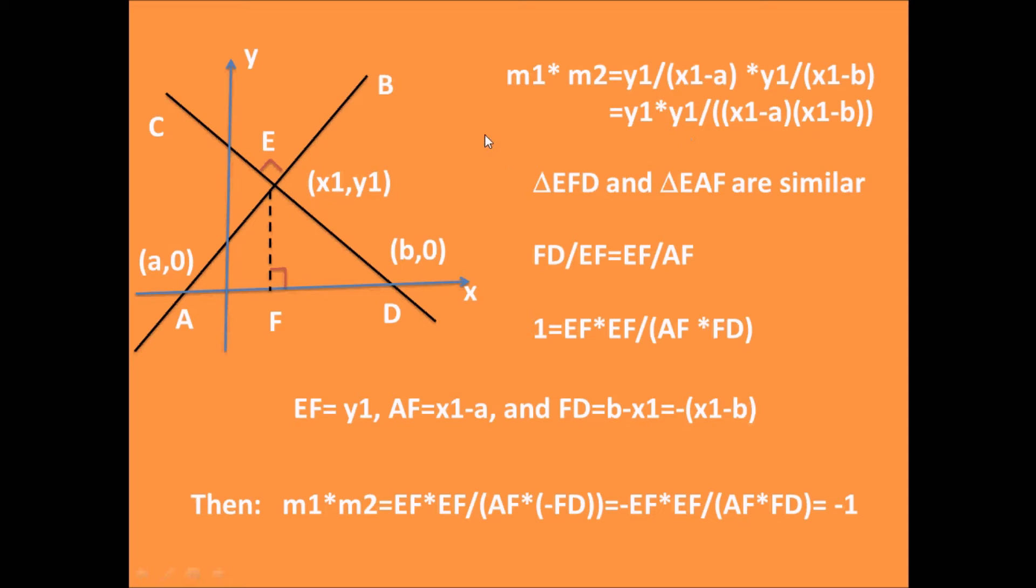If we draw a line from E perpendicular to the x-axis, we get two small right triangles EAF and EFD. These two triangles are similar because each has a right angle and angle AEF equals angle EDF.